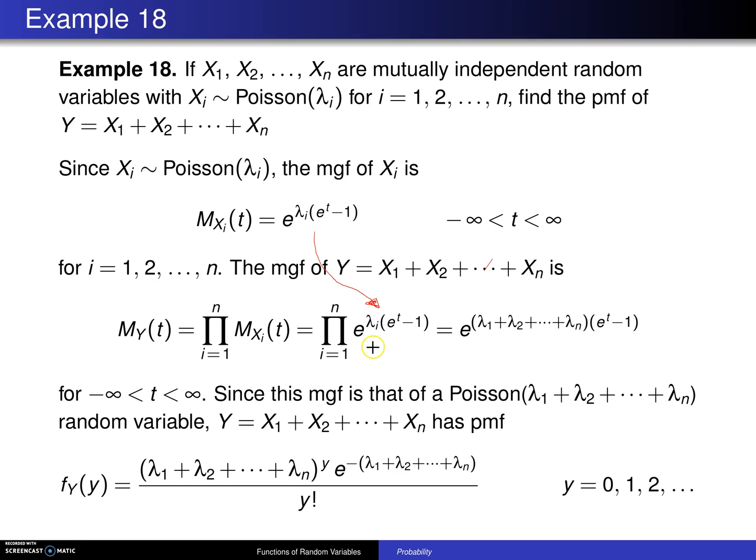And then this particular distribution has e to the minus lambda sub i times e to the t minus 1. Well, when you take the product here, it's because of like base add exponents, you get e to the lambda 1 plus lambda 2 plus lambda n times e to the t minus 1.